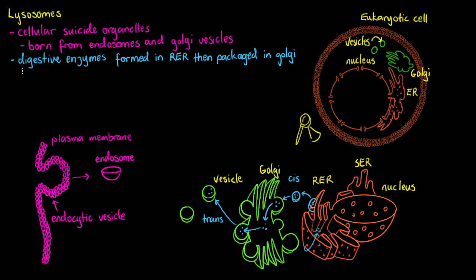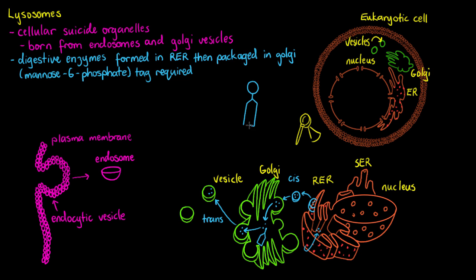This labeling happening within the Golgi apparatus is very important. All of these digestive enzymes or peptides are going to be labeled with a mannose-6-phosphate tag. That tag tells the Golgi apparatus that they're going to go to a specific destination. Within the Golgi apparatus, each digestive enzyme receives a mannose-6-phosphate tag. At the trans end of the Golgi apparatus, mannose-6-phosphate receptors interact with these tags to ensure all enzymes are packaged into the correct vesicle, which then buds off as the lysosomal vesicle.